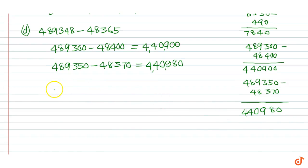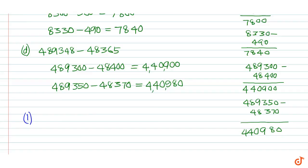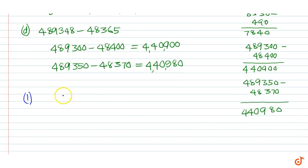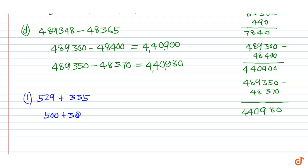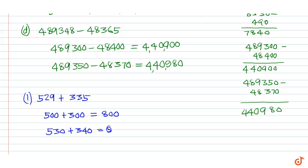We have to make 4 more such examples. Example 1: 529 plus 335. Rounding off to the nearest hundred we get 500 plus 300, which is equal to 800. Rounding off to the nearest ten we get 530 plus 340, which is equal to 870.